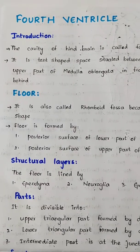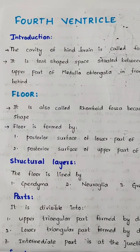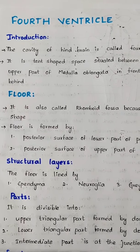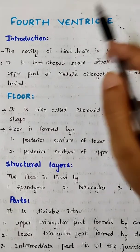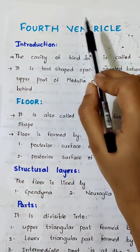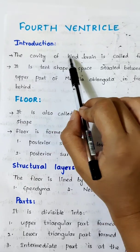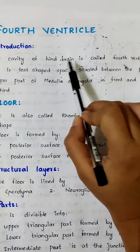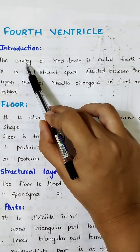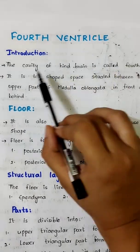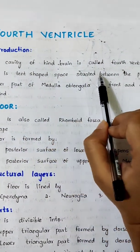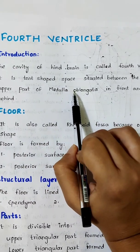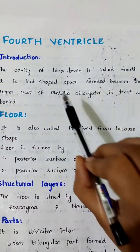Hello guys, welcome to my channel. Today we are going to talk about the floor of the 4th ventricle. The cavity of the hindbrain is called the 4th ventricle. It is a tent-shaped space situated between the pons and the upper part of the medulla.